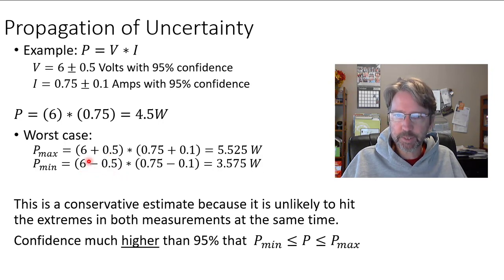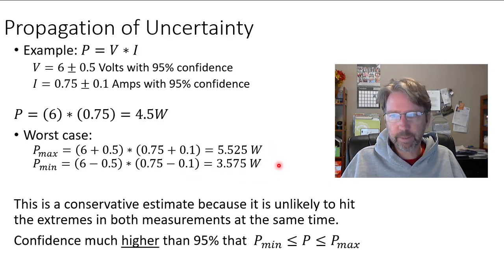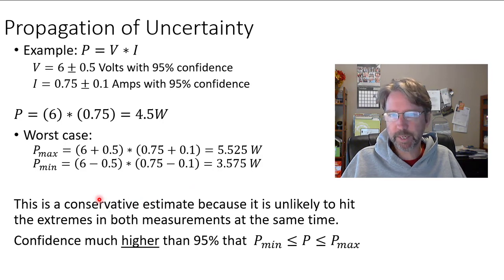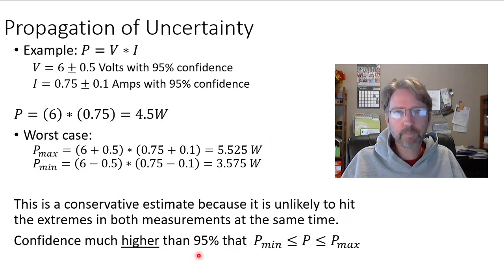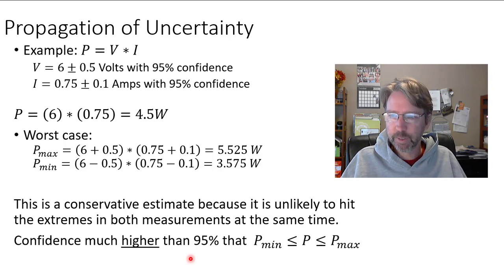If you combine measurements in a way that maximizes or minimizes the calculation, you have to be careful — if you're dividing or subtracting, you might want to combine the maximum of one with the minimum of the other. Here, the maximum times the maximum gives the maximum power, and the minimum voltage times the minimum current gives the minimum power. The problem with this method, even though it's easy to understand, is that it's conservative — it's unlikely you'd have the worst case in voltage at the same time as the worst case in current. So this conservative number is less likely than our original measurements, and our confidence ends up much higher than 95%.